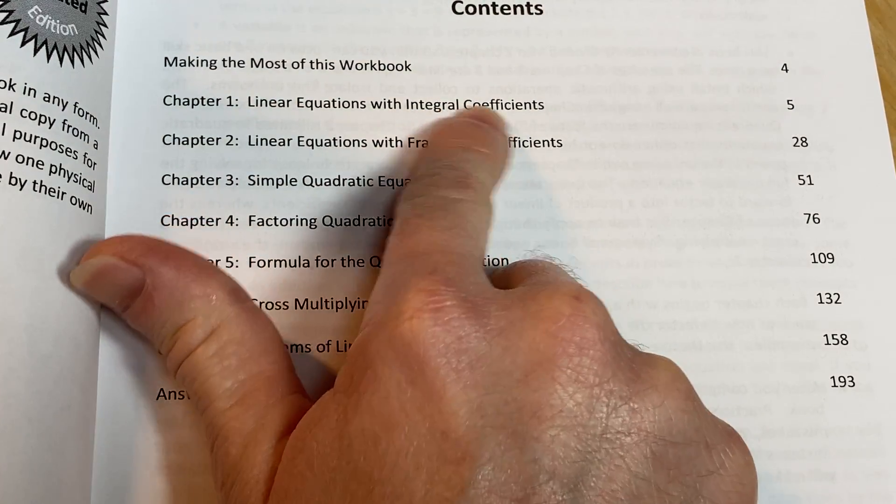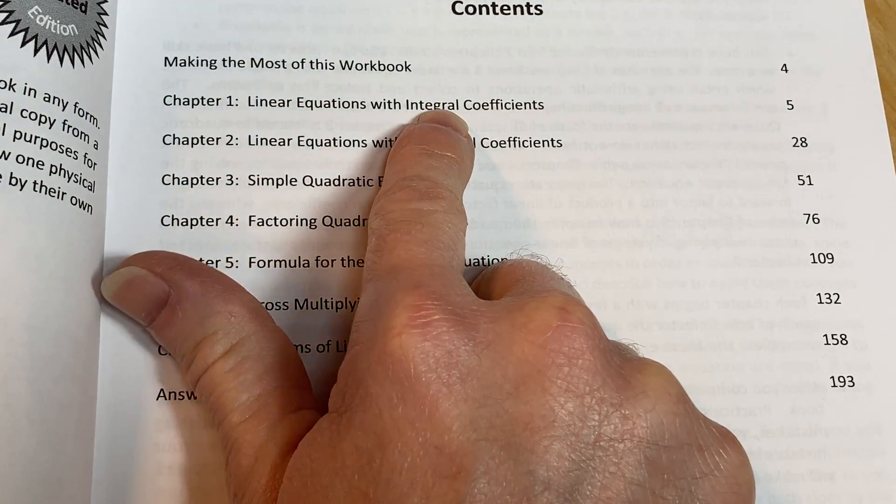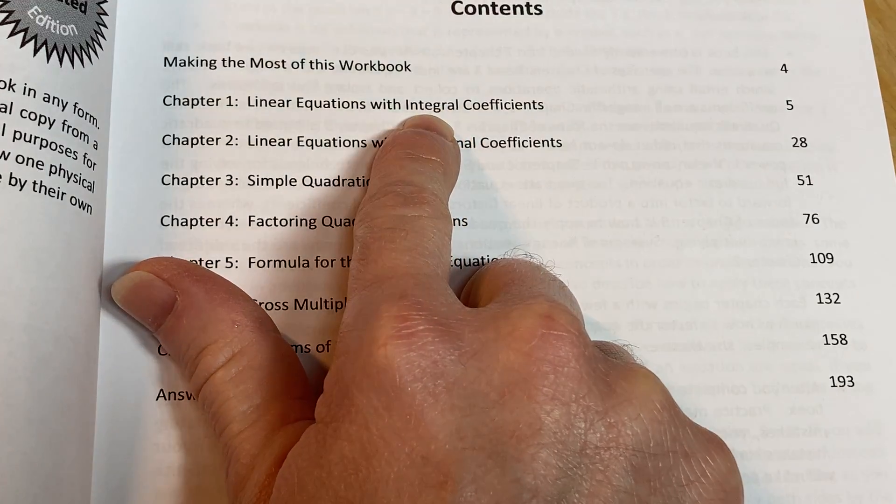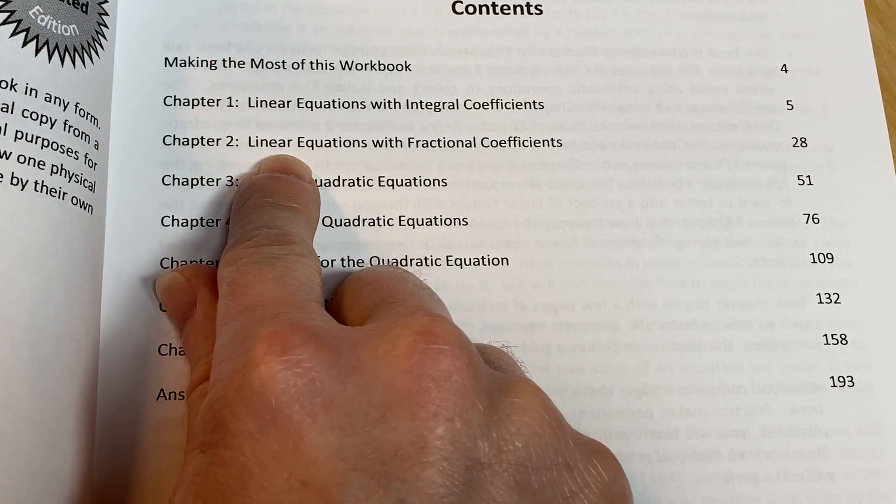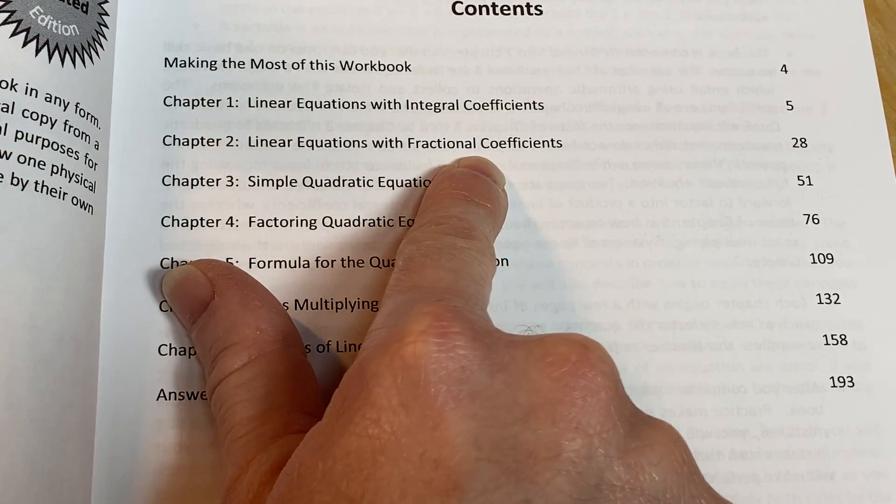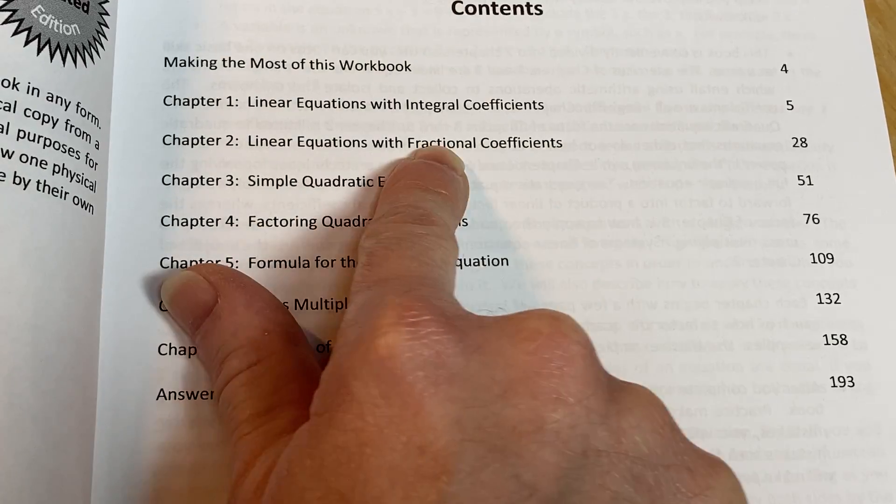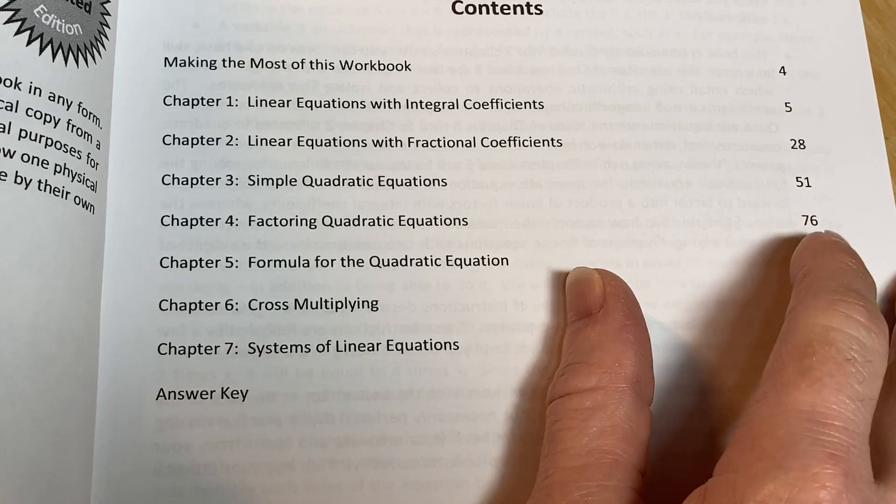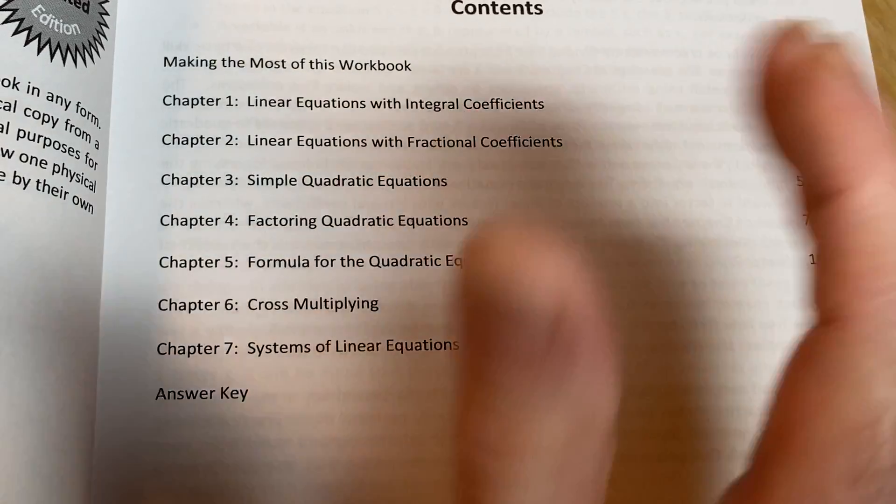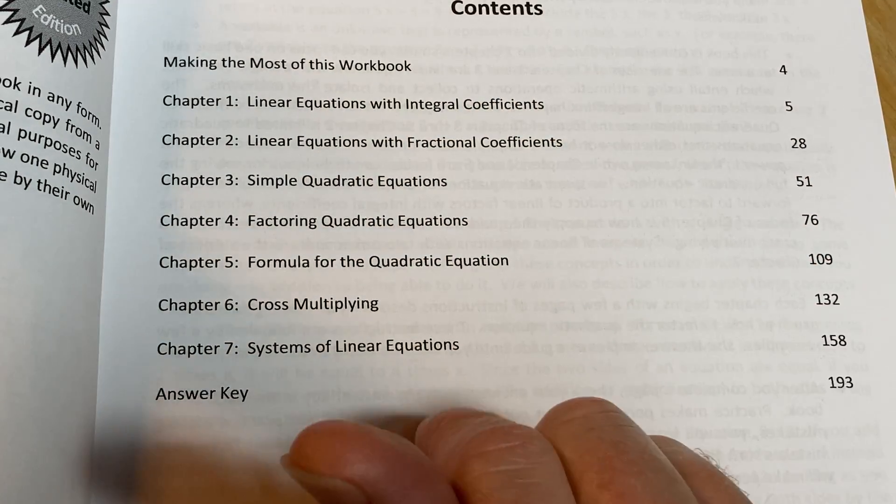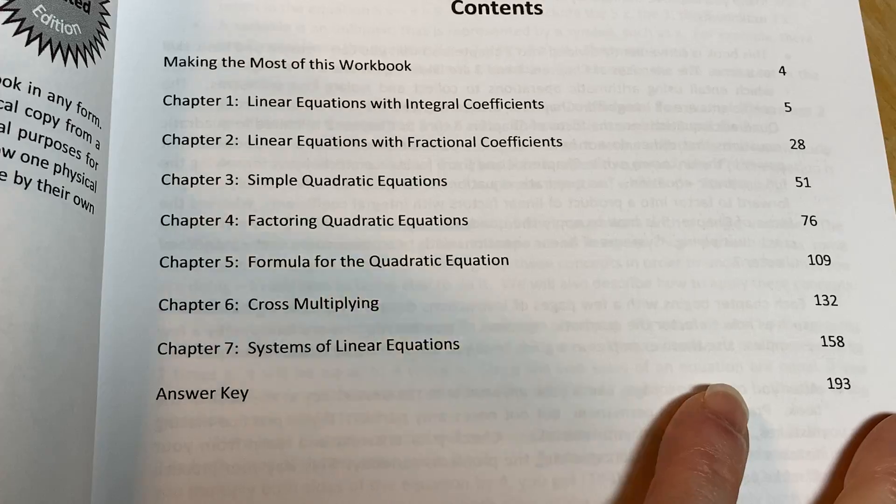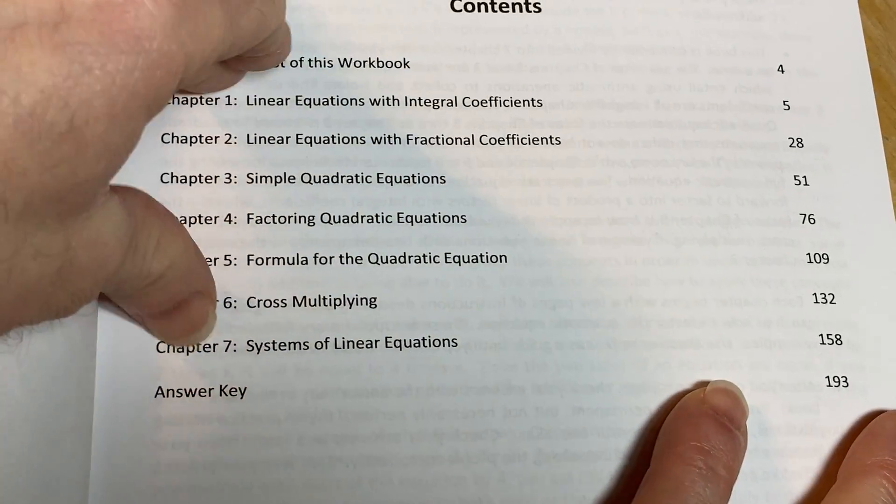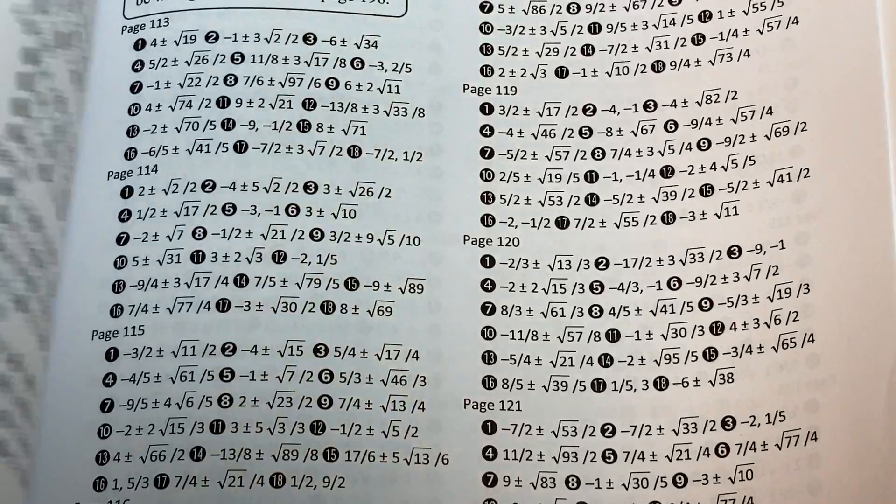So linear equations with integral coefficients, that basically means the coefficients are whole numbers, so like 2x plus 5 equals 0. Linear equations with fractional coefficients, that basically means you have fractions in the equations. Simple quadratic equations, factoring quadratic equations, formula for the quadratic equation, cross multiplying and systems of linear equations. So very restricted in terms of its topics and it has an answer key so you have answers to every single problem.